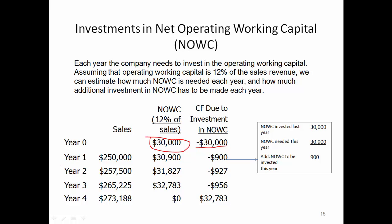Now in year one, at the end of year one, we actually can recover the $30,000 investment in NOWC. But by the end of year one, we look at year two, and year two sales revenue is estimated to be $257,500. And 12% of that would be $30,900. If we have to invest $30,900, we can recover $30,000 from last year — that means we have to make an additional investment of $900.